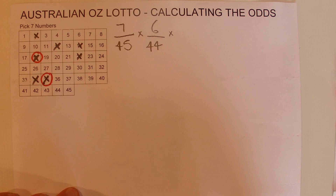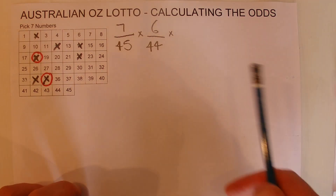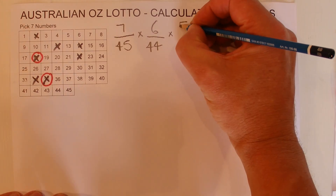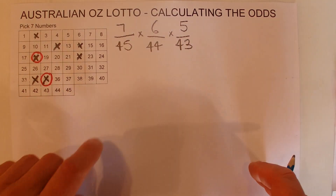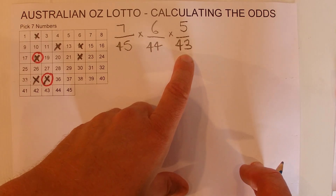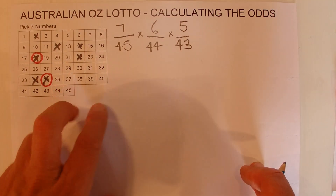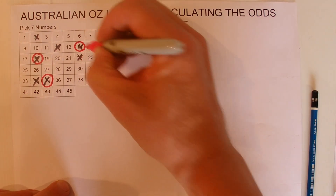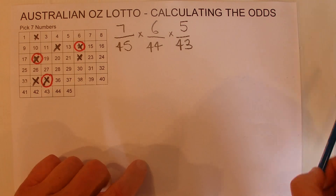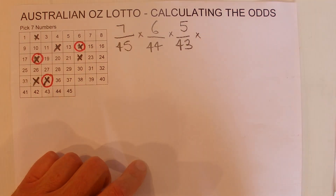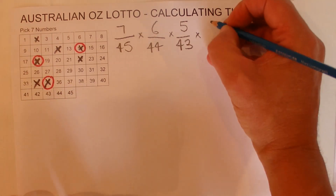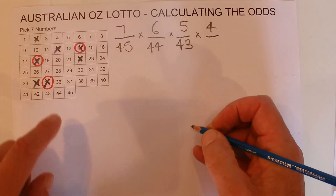For the third number that's drawn, you've got five chances out of 43, because there were 43 balls left in the barrel — two have already been drawn. So you've got five chances in 43 of matching the third number. I'll mark off a number on my panel. When the fourth number is drawn, you're left with four chances in 42.